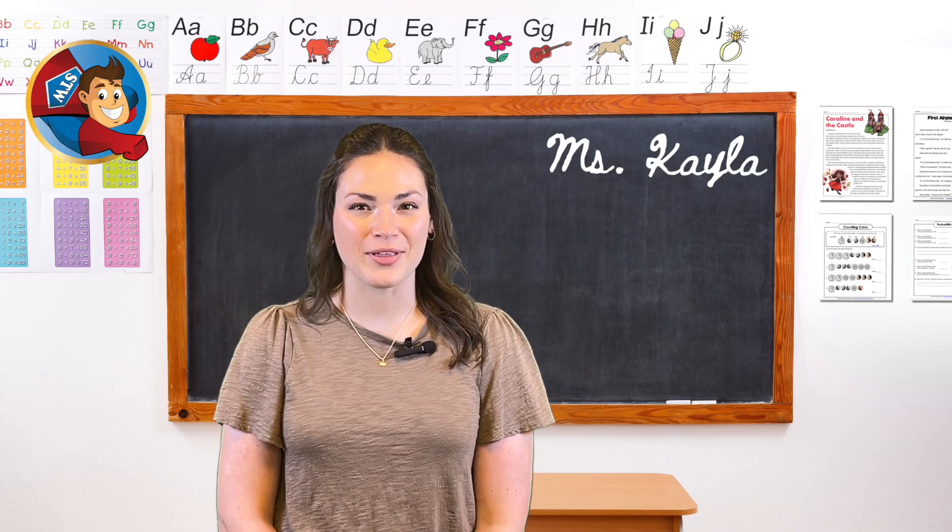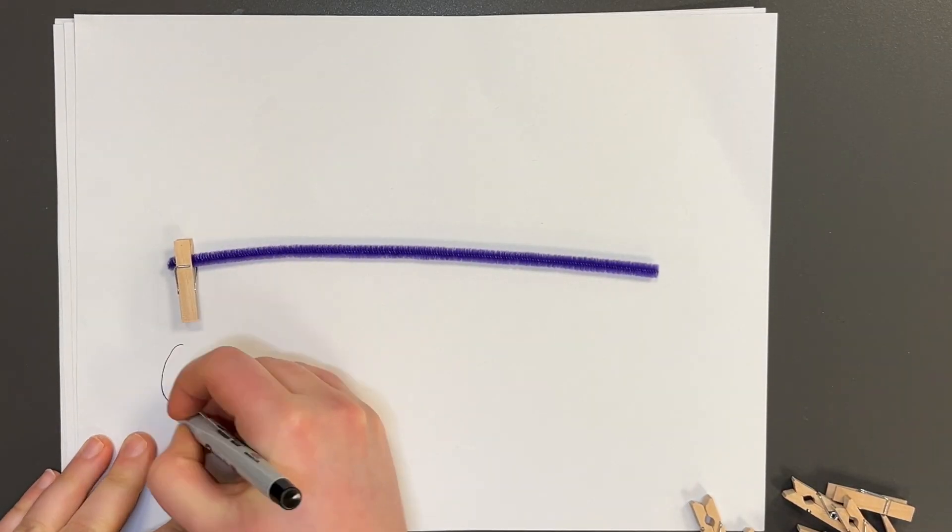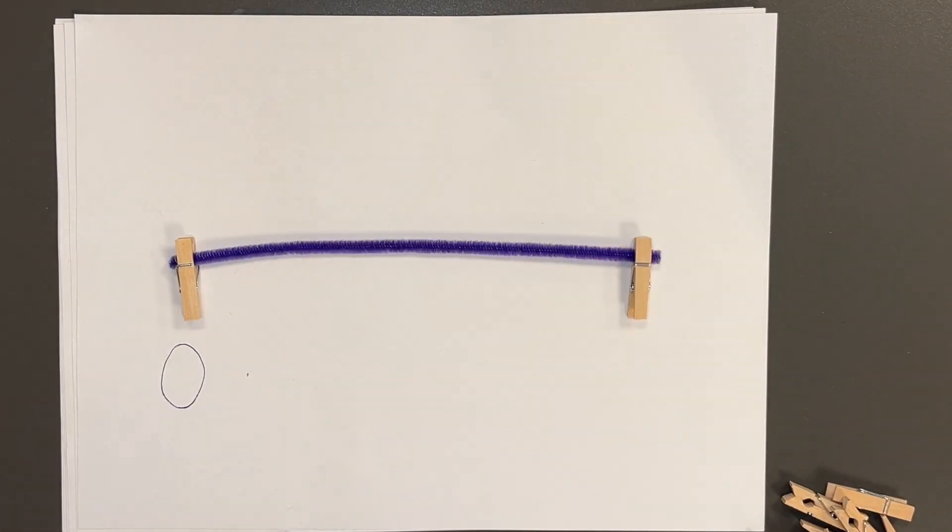Now let's mark some fractions on our number line. Take two clothes pins and lay them at each end. This will represent zero and one.